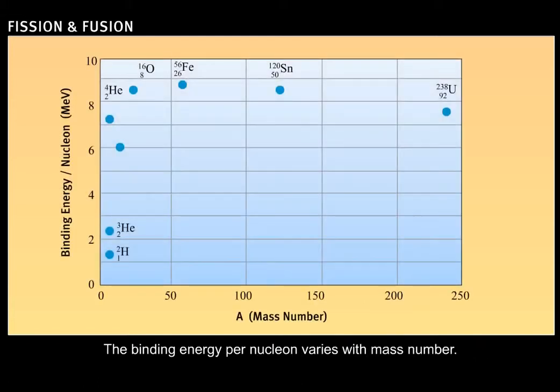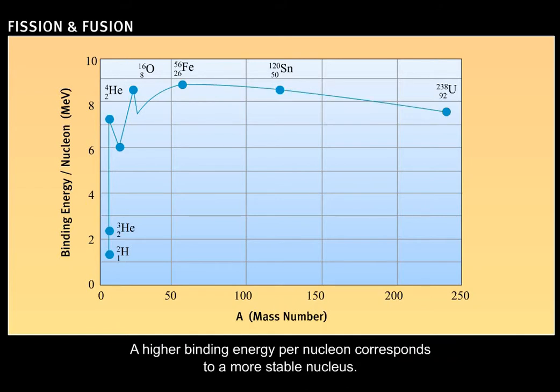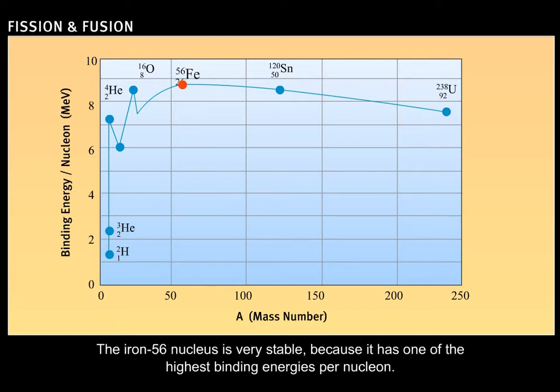The binding energy per nucleon varies with mass number. A higher binding energy per nucleon corresponds to a more stable nucleus. The iron-56 nucleus is very stable, because it has one of the highest binding energies per nucleon.